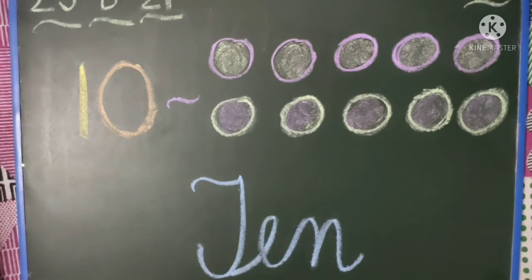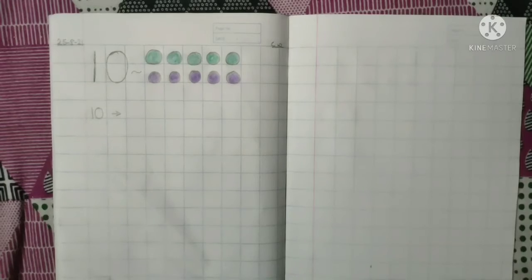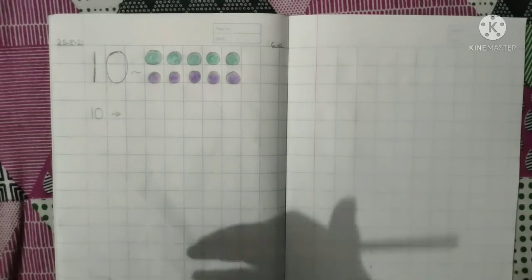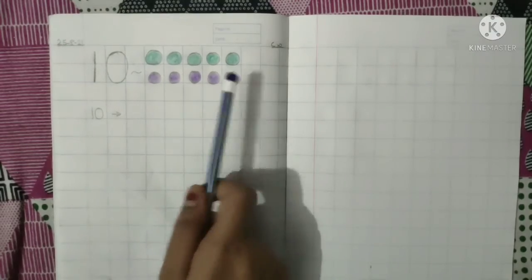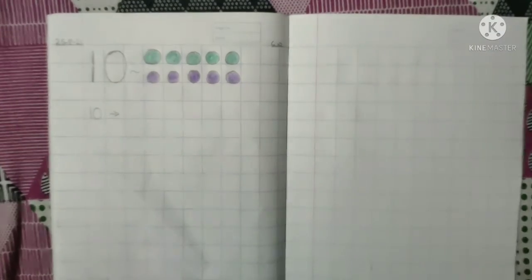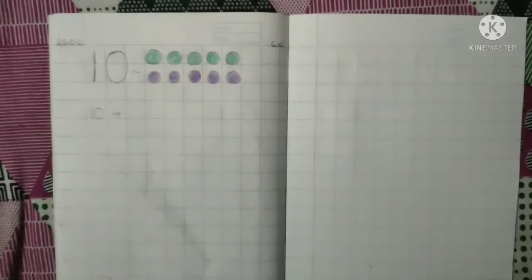Now we will practice on our notebook. So this is your notebook. And in the notebook, I have made a ten circle. Now we will write the number name 10 in the notebook. So watch very carefully.